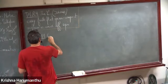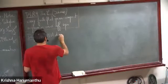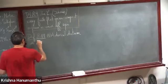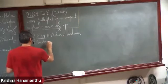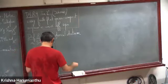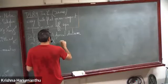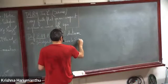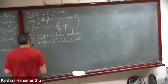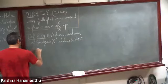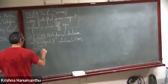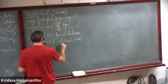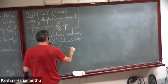The first part of the definition: a descent datum on an S'-object X' is an S''-isomorphism φ: X''_1 → X''_2 — that is, an isomorphism from the fiber product of X' with S'' using the first projection to the fiber product using the second projection.